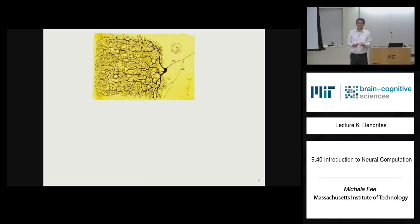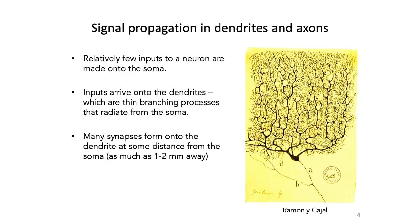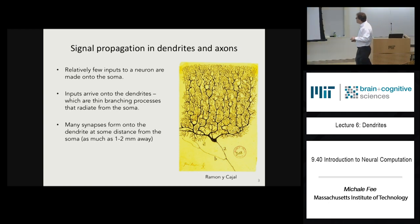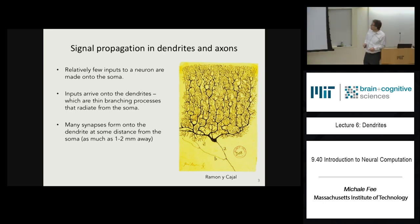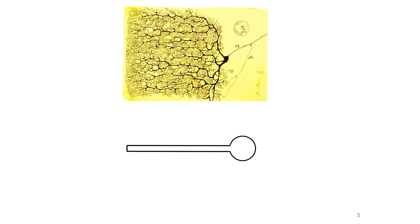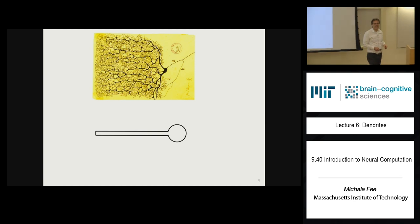The most important thing we're going to do is simplify this. By the way, does anybody know what kind of cell this is? It's a Purkinje cell — one of the cells that Ramón y Cajal drew back in the late 1800s. The first most important thing we're going to do is simplify this very complex dendritic arborization and basically think of it as a single cylinder.